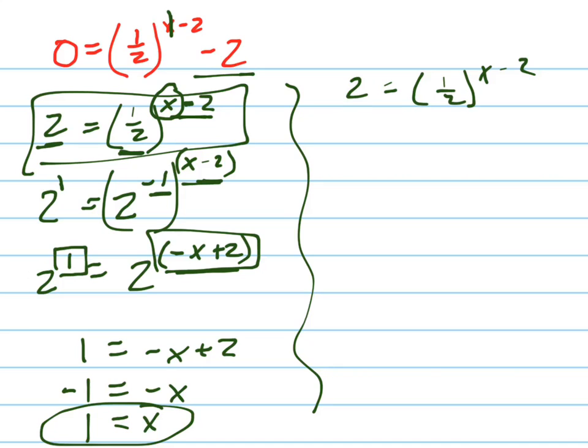What you could have done is you could have taken the log of both sides, log base 10 of both sides. And the reason you do that is because that allows you to take this down in front. You remember that rule?